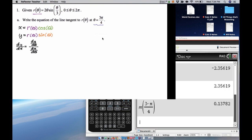So x(3π/4) is approximately negative 2.356. And y(3π/4) is approximately 2.356, so positive. And then the slope, dy/dx evaluated at θ = 3π/4 is approximately 0.138. And now what I need to do is write the equation of the tangent line.